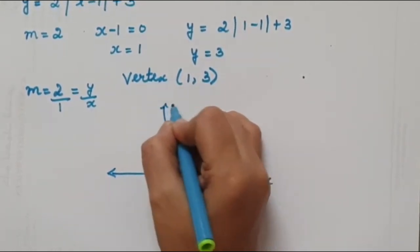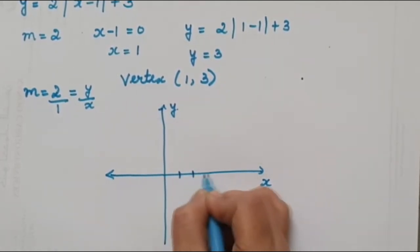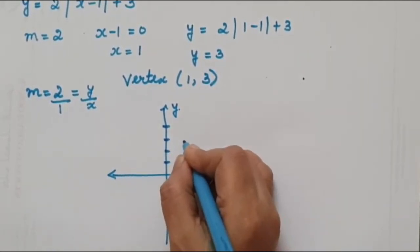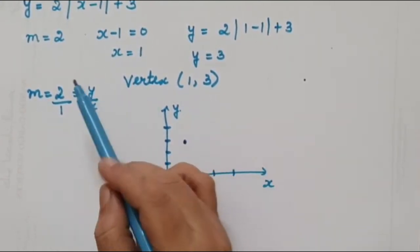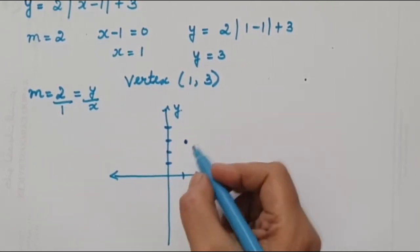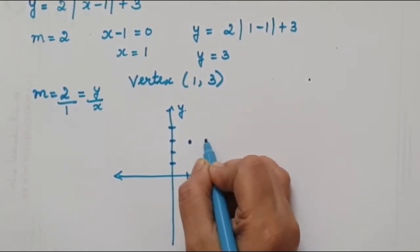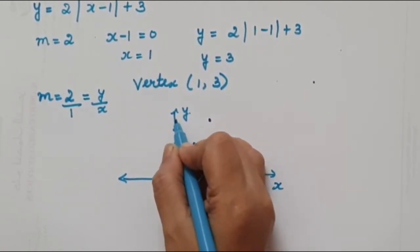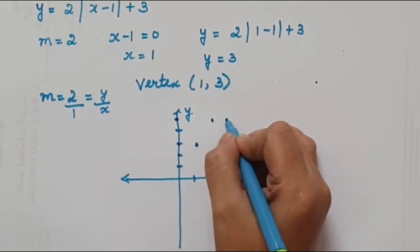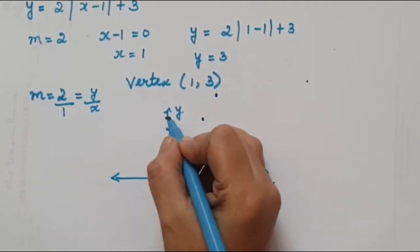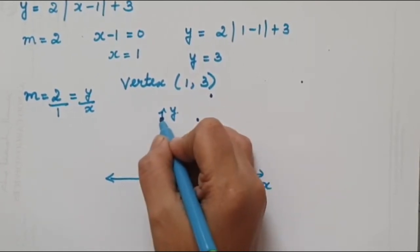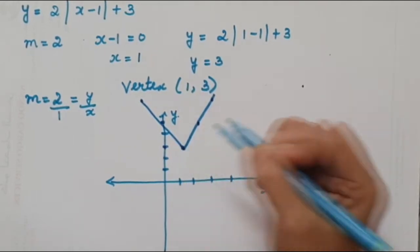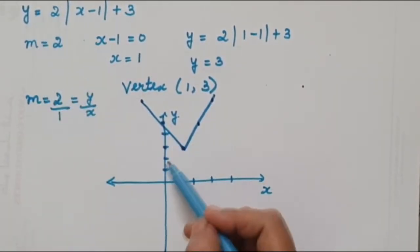Drawing this out: with vertex at (1, 3), we move 1 block in x and 2 blocks in y for each point. The graph opens upward with a steeper V shape due to the slope of 2. If there were a negative sign, the same graph would open downward instead.